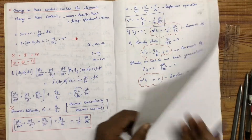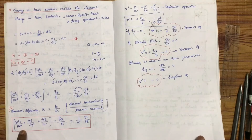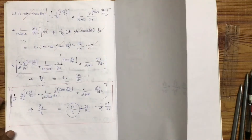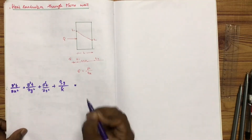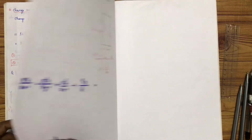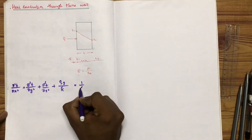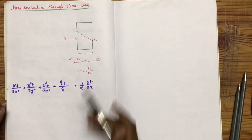This equation is: ∂²T/∂x² + ∂²T/∂y² + ∂²T/∂z² + qg/k = (1/α)(∂T/∂t), where qg is the heat generated per unit volume, k is the thermal conductivity, and α is the thermal diffusivity. This is the general heat conduction equation in the Cartesian coordinate system.